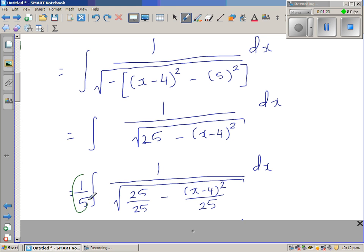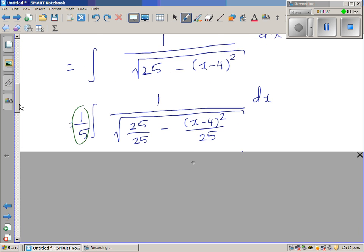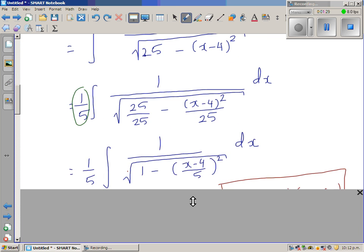And you've got this 1 fifth sitting here to cancel what I have done here. I hope this step is clear. This is one of the most important steps. This is 1 minus x minus 4 over 5 the whole squared.